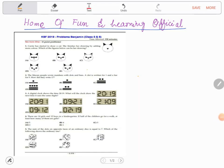Welcome to Home of Fun and Learning Official. Today I will be solving International Kangaroo Mathematics Contest 2019 paper of Benjamin level, class 5 to 6. So let's start. Question number one says Cary has started to draw a cat.